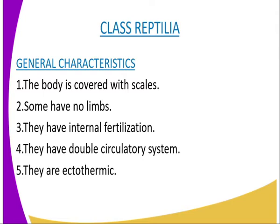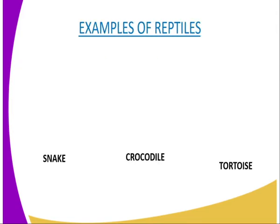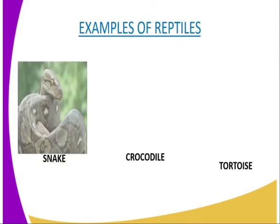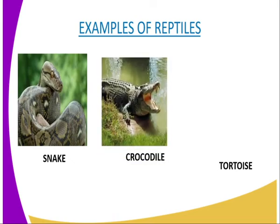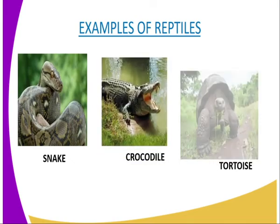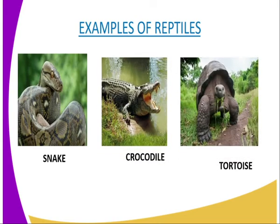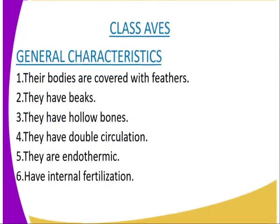The fifth characteristic is that they have well-developed lungs for gaseous exchange, eliminating the need to use the skin or the mouth for gaseous exchange. Last but not least, they are ectothermic, that is the body temperature varies with that of the surrounding.